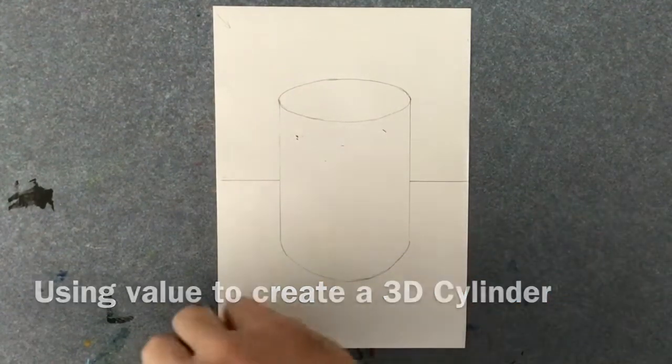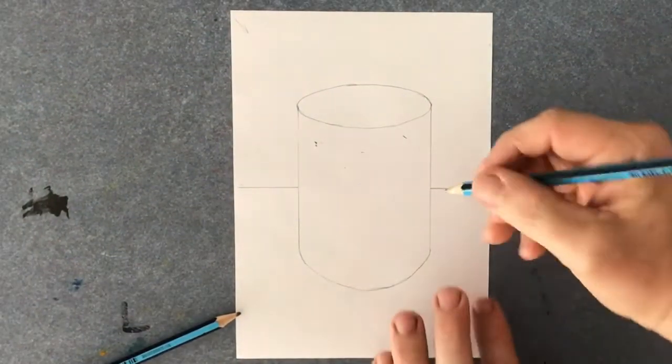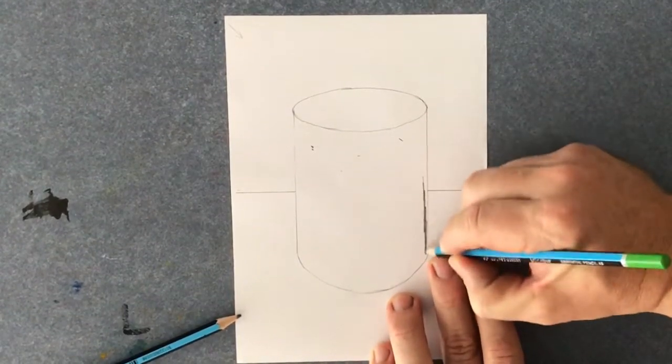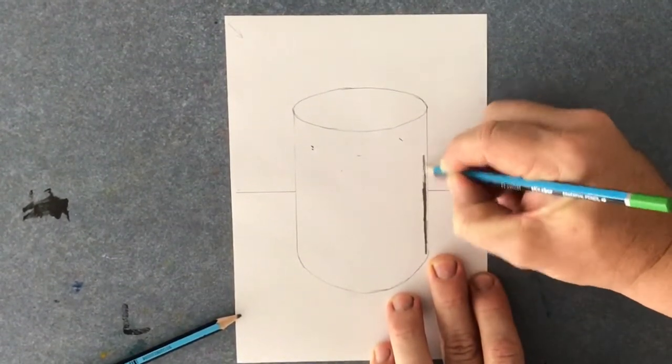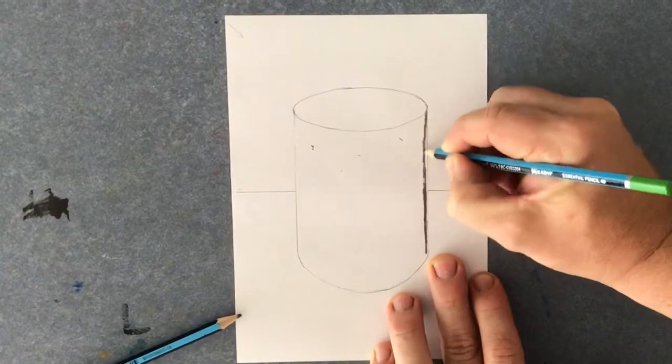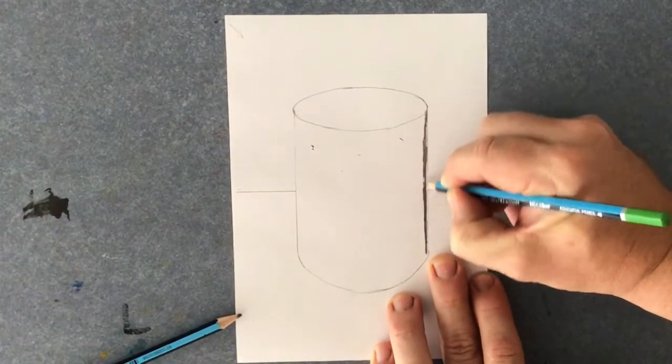So with my darkest pencil, I'm going to shade along this line here really dark. Now I control how dark it's going to be by the pressure that I put on my pencil.